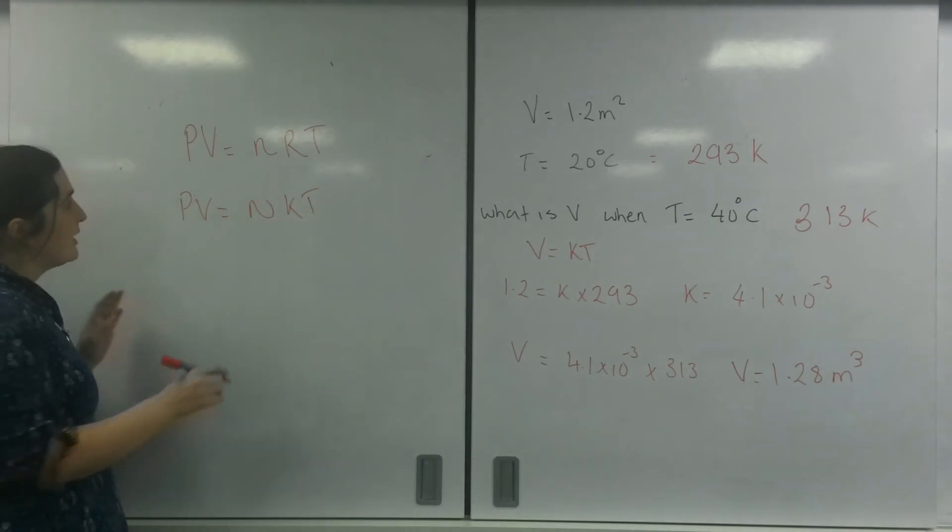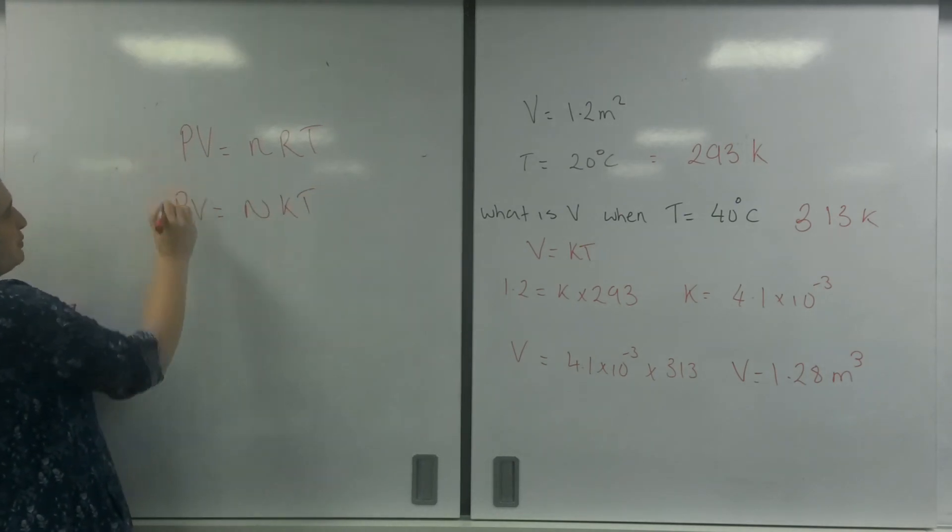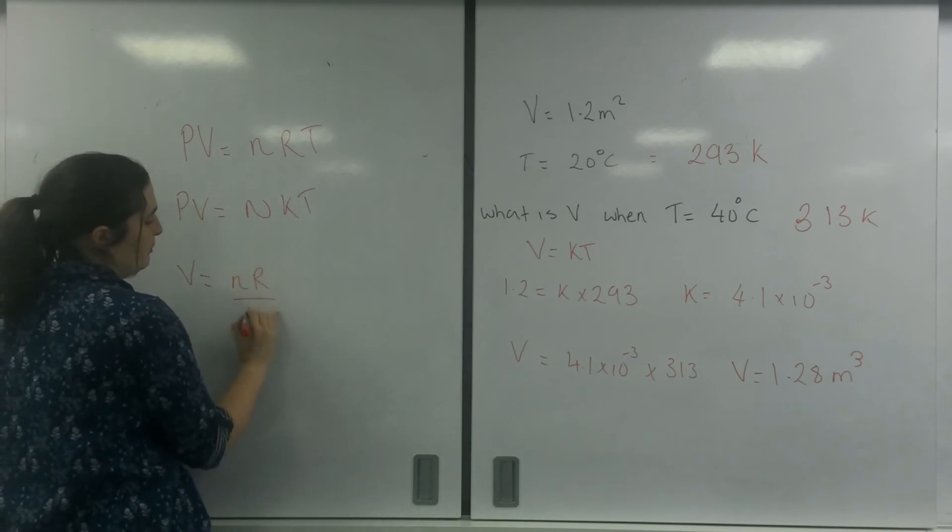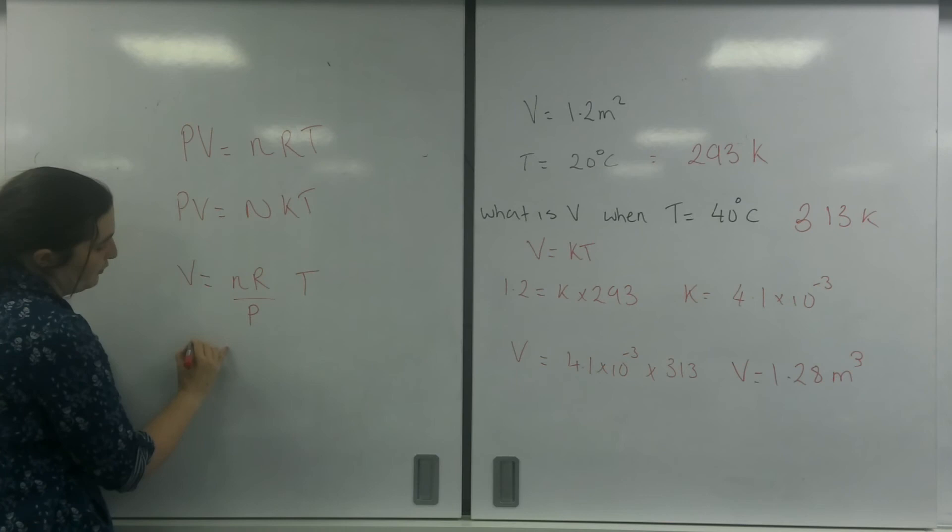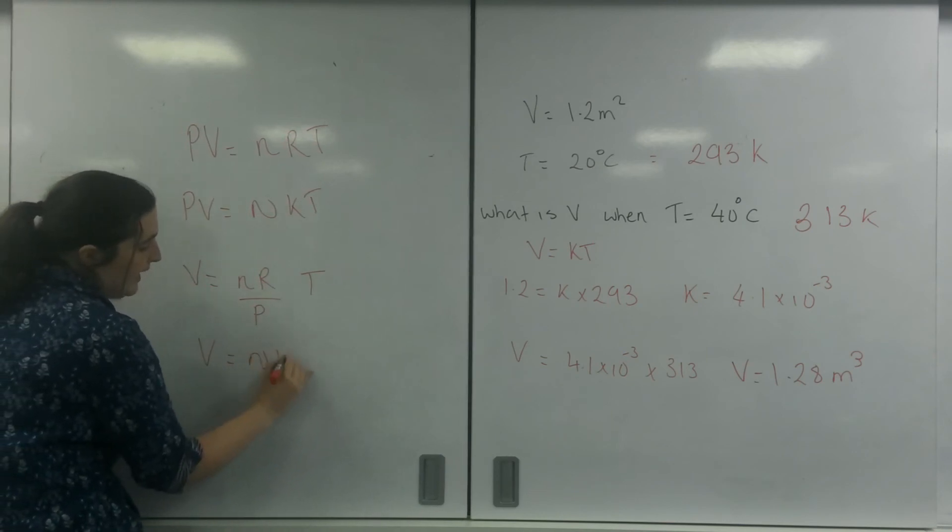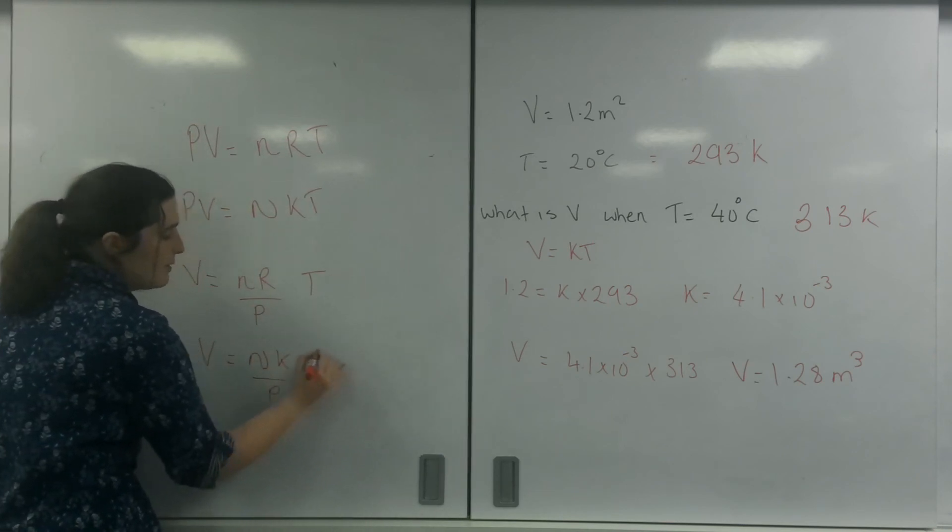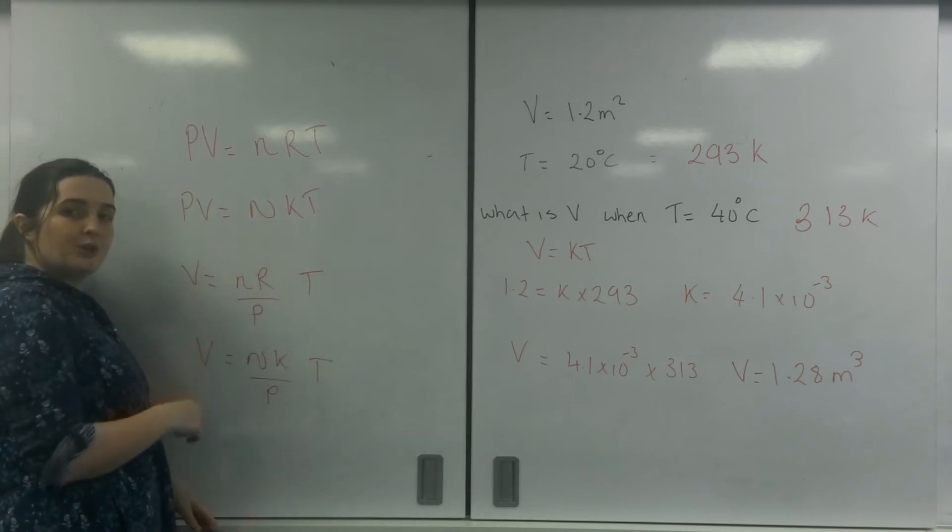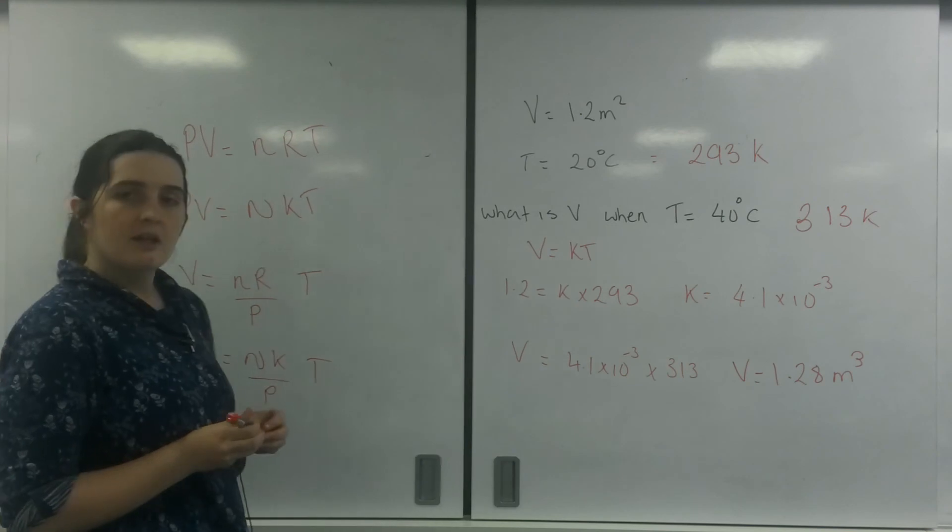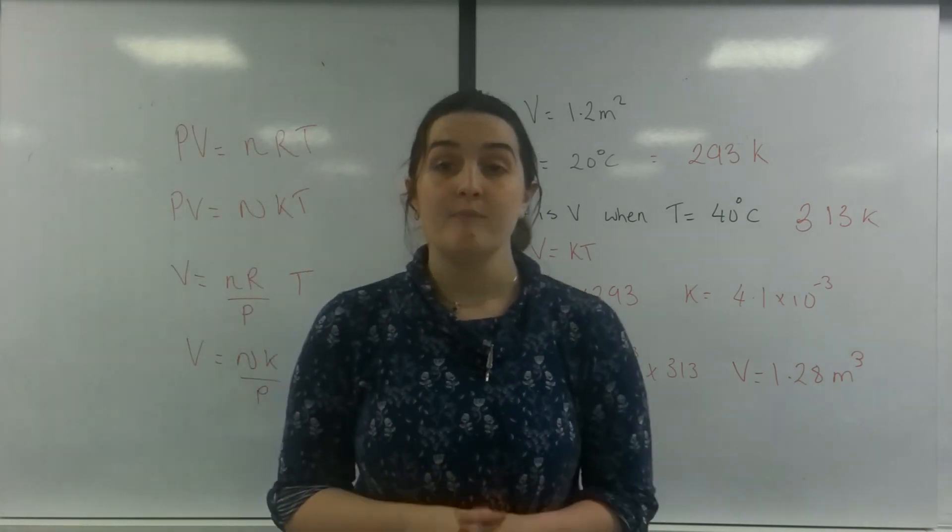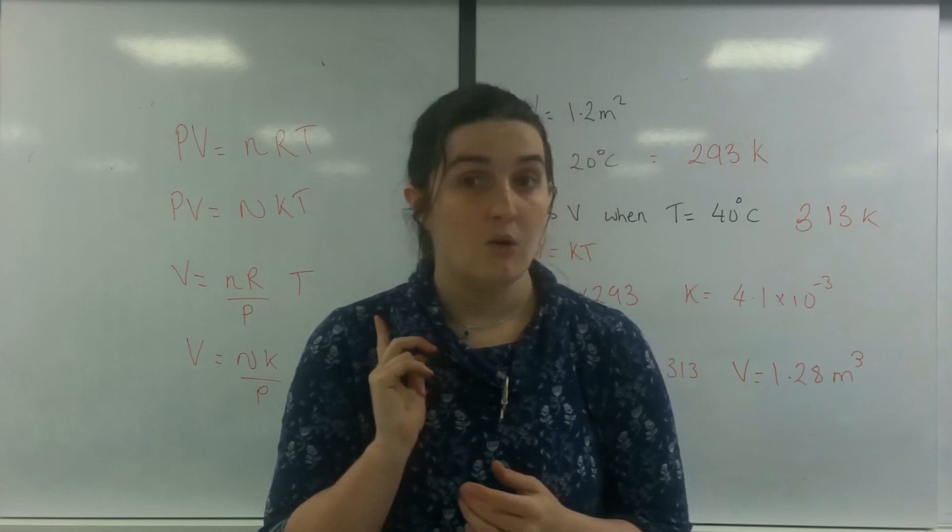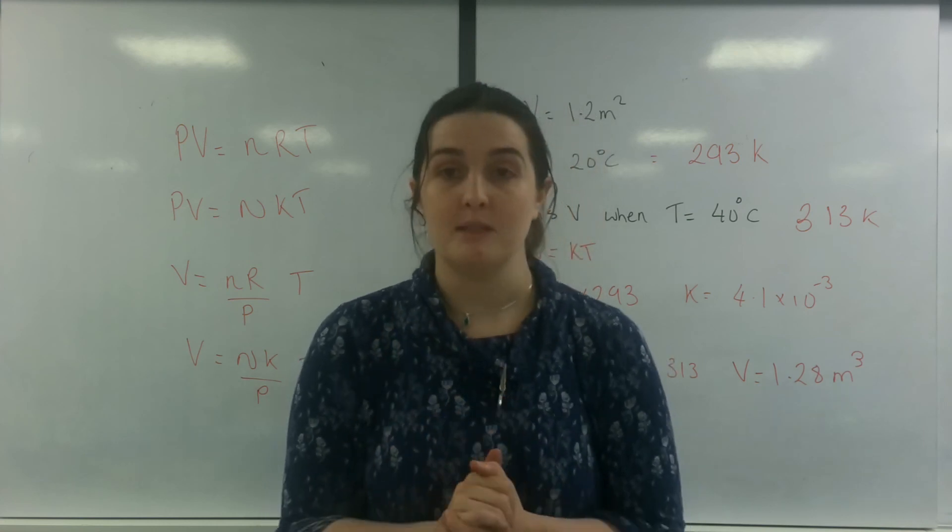And if I rearrange this, you end up with V equals NR over P times T, or V equals Nk over P times T. If everything else in this is constant, this is your constant here. So that there is Charles' Law. Remember, temperature always must be in Kelvin.